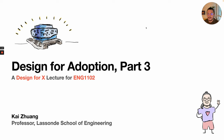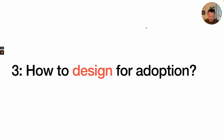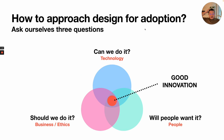Hello everybody, it's Professor Kai here. Welcome back to Design for Adoption. This is part three of our three-part virtual talk, and it's part of the Design for X series of lectures for ENG 1102. Coming back to the idea of Design for Adoption, we talked about what innovation is, and we talked about why some innovations and engineering designs don't work — why innovations are rejected by people or don't get adopted.